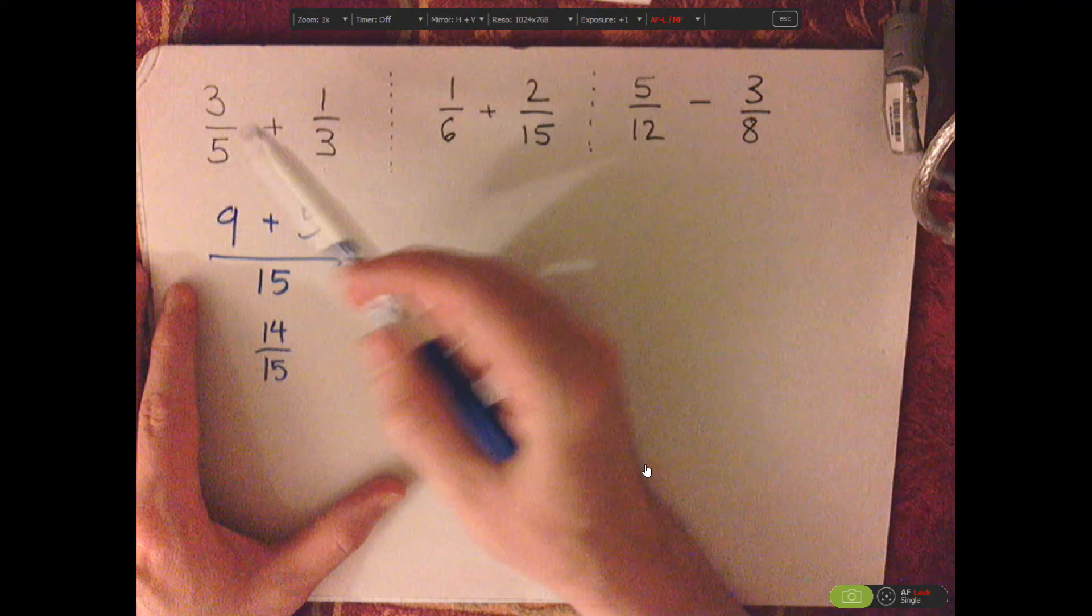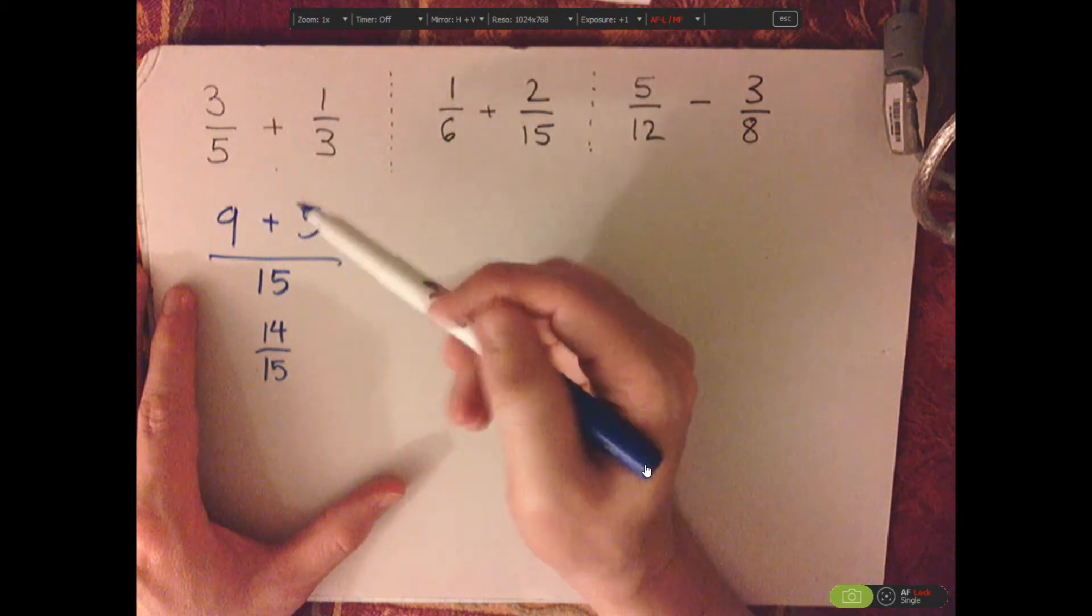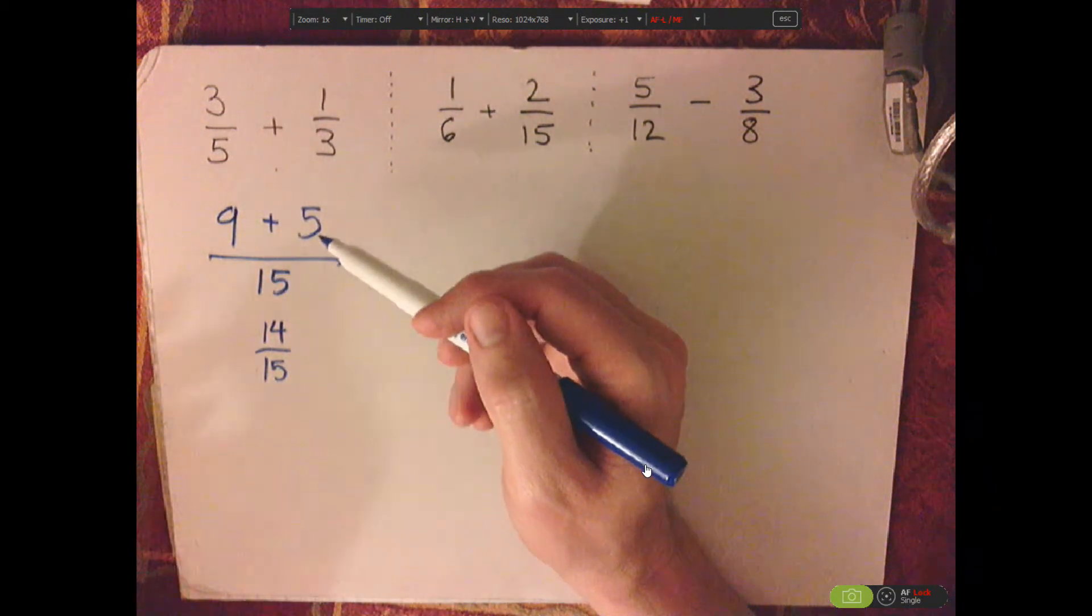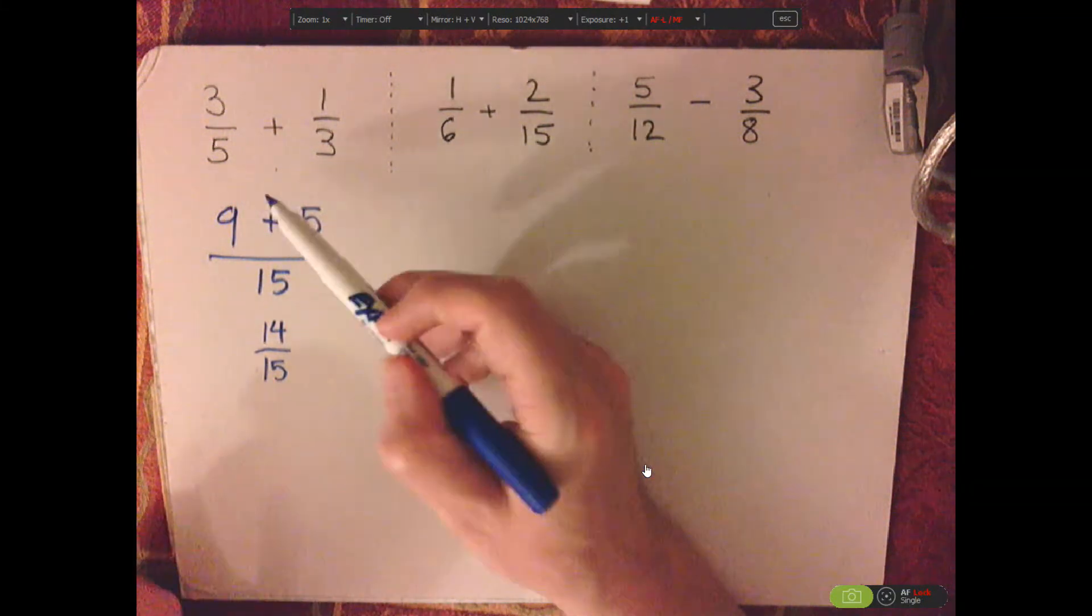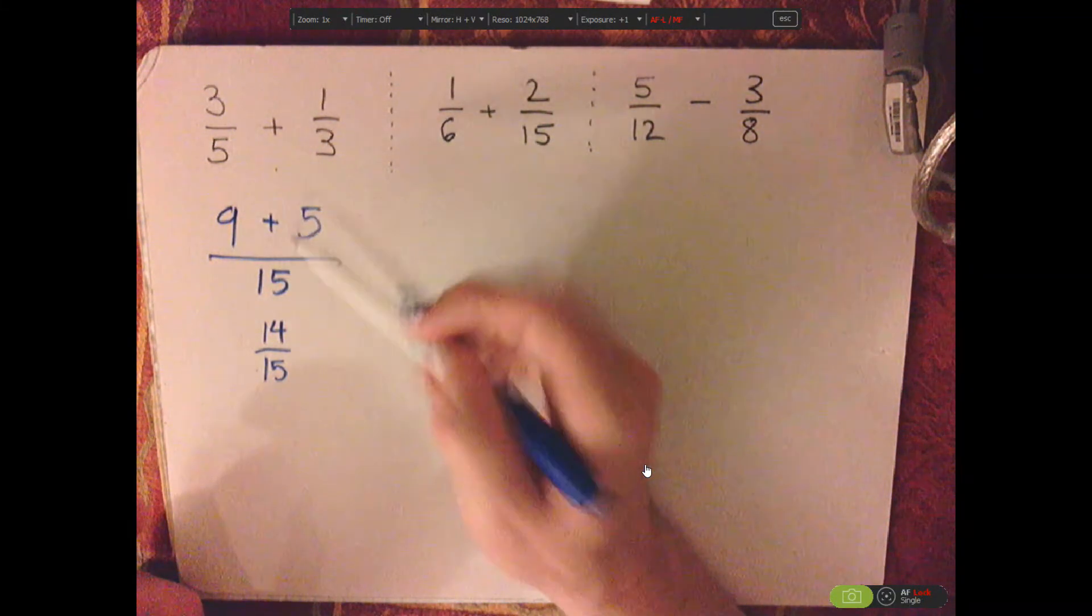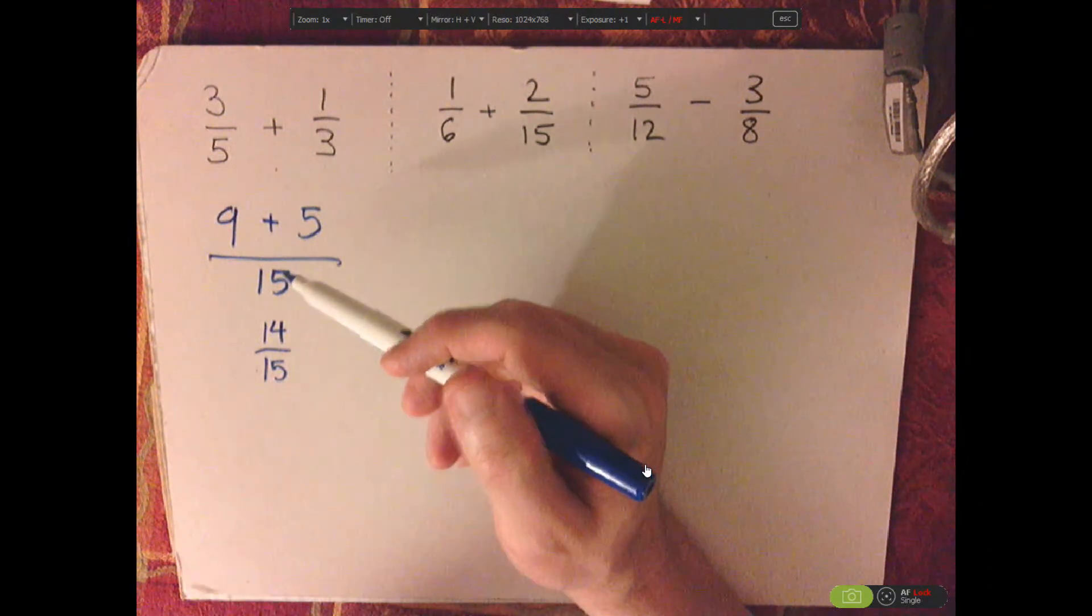Now, with something like this, with 9 plus 5, you can do that in your head. So that would be 14. And then 5 times 3 is 15, so 14 fifteenths.